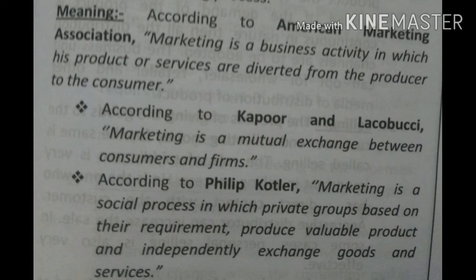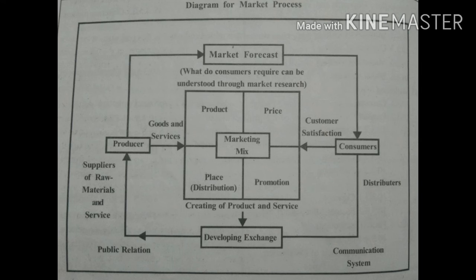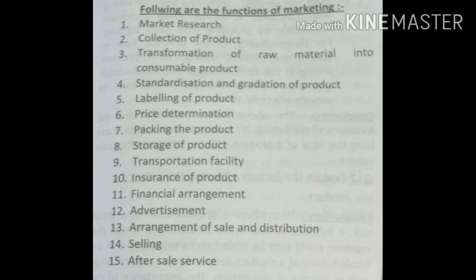According to Philip Kotler, marketing is a social process in which private groups, based on their requirements, produce valuable products and independently exchange goods and services. You can see the diagram for the market process. Functions of the marketing process include: market research, collection of product, transformation of raw materials into consumable products, standardization and gradation, labeling, price determination, packing, storage, transportation, insurance, financial arrangement, advertisement, arrangement of sale and distribution, selling, and after-sale service. In the next session, we will be learning these in detail.